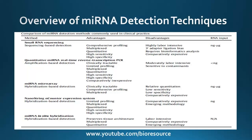This slide summarizes the advantages and limitations of different miRNA detection techniques. The sequencing-based method can perform comprehensive profiling and multiplexing, is quantitative, and gives high sensitivity and specificity. However, it is labor intensive, requires adapter ligation which can induce bias, needs bioinformatic analysis, and is an expensive process.